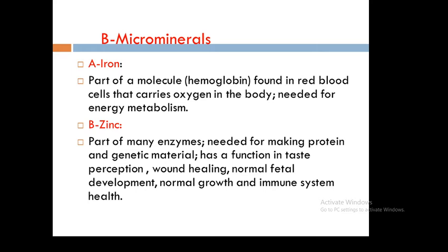Microminerals are those the body needs in very small amounts — also called trace minerals. Iron is part of the hemoglobin molecule found in red blood cells, which carries oxygen in the body, and it is needed for energy metabolism. Sources of iron include red meat, fish, egg yolk, dried fruits, leafy greens, bread, and cereals.